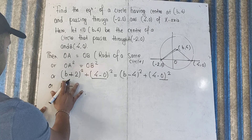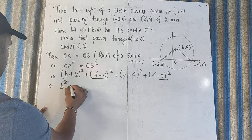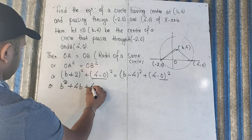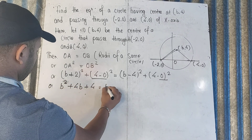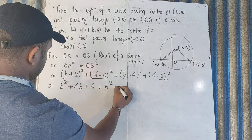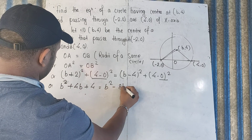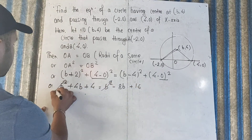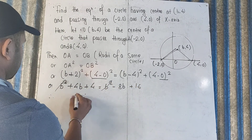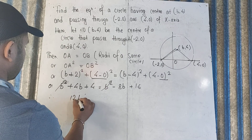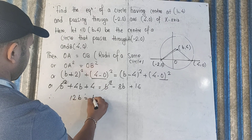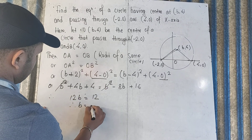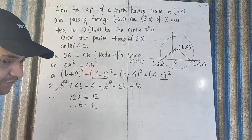Expanding: b² plus 4b plus 4 equals b² minus 8b plus 16. The b² terms cancel, leaving 4b plus 8b equals 12b. So 12b equals 12, giving b equals 1.